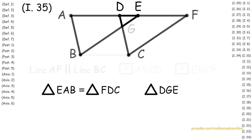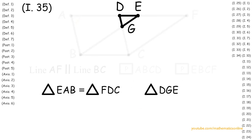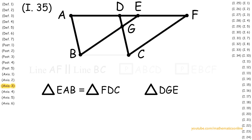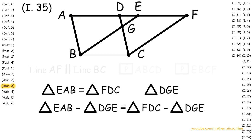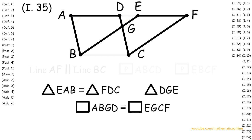Next, with triangle DGE, we apply Axiom 3 to attain that triangle EAB minus triangle DGE is congruent to triangle FDC minus triangle DGE. And what this turns out to be is that quadrilateral ABGD is congruent to quadrilateral EGCF.